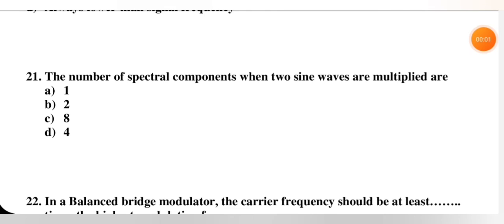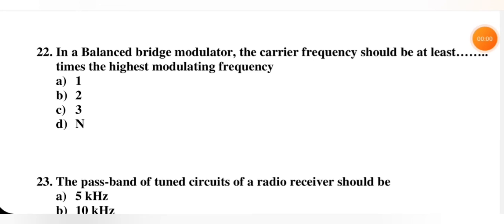Next question: the number of spectral components when two sine waves are multiplied — one, two, eight, or four. The right option is D — four spectral components.